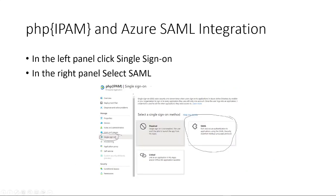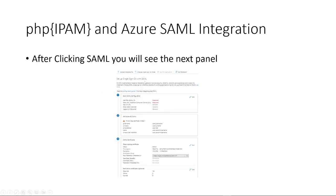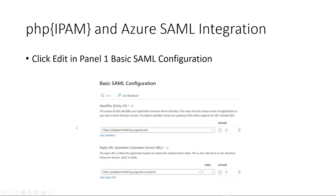We'll go down to the Single Sign-On Selector panel on the left and select SAML as our method of authentication. Then we have this screen that will show up. The first part we need to fill out is the Basic SAML Configuration. From our notepad, we want to grab item 1 and paste it in there, then grab the SAML 2 value and paste that in as well.